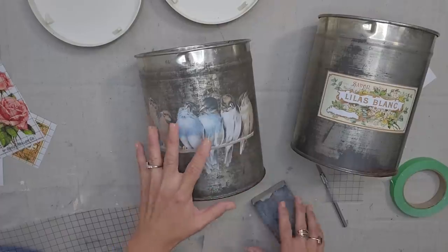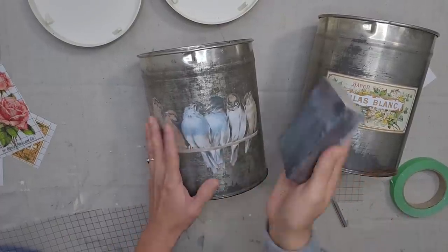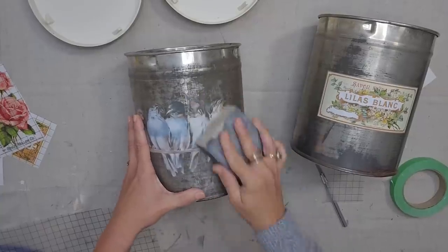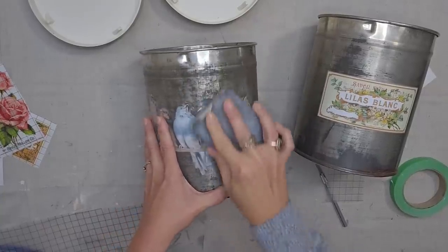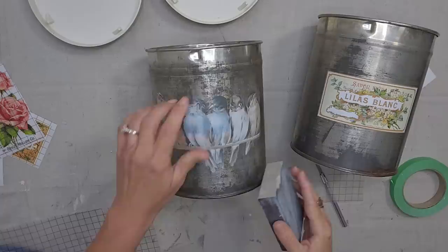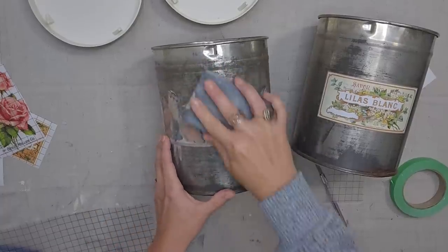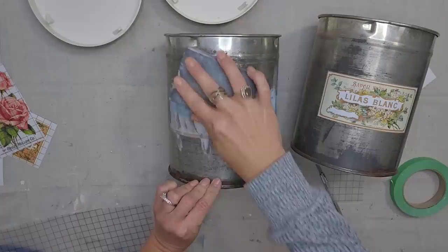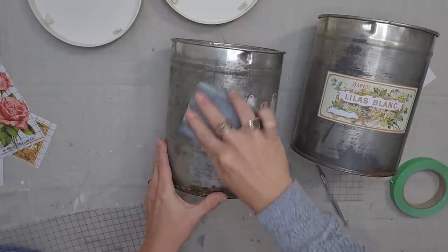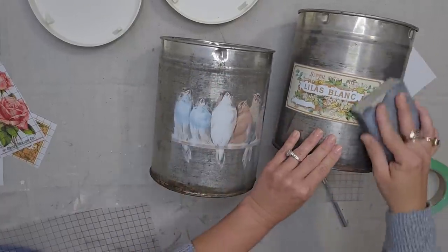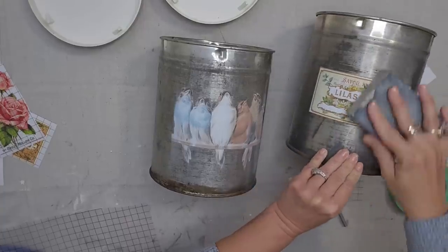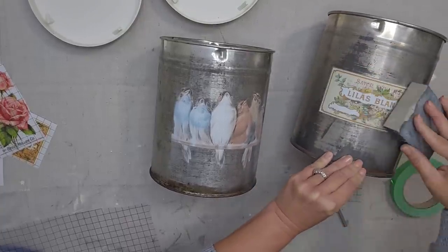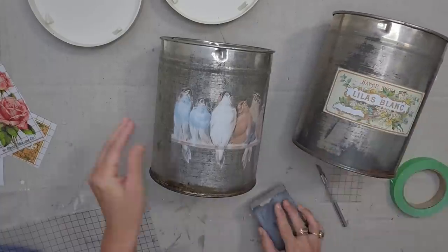Now this next step is total personal preference. I like to distress my transfers a little bit. I just find it feels like the transfer has always been on this piece if you just kind of rough it up a little bit and let a little bit of the background come through. So I just have my sanding block and I am just very lightly sanding this and it's just a subtle difference. But to me, design is all in the details. And so I really like the way that it looks if you just subtly and carefully sand your transfers.